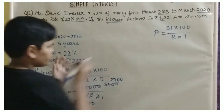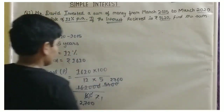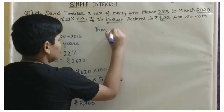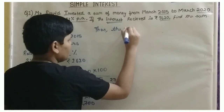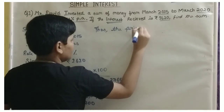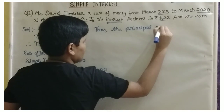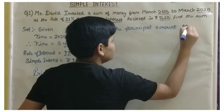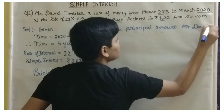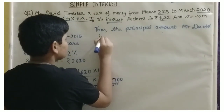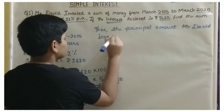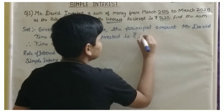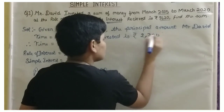Thus, the Principal Amount Mr. David invested is Rupees 2,700.